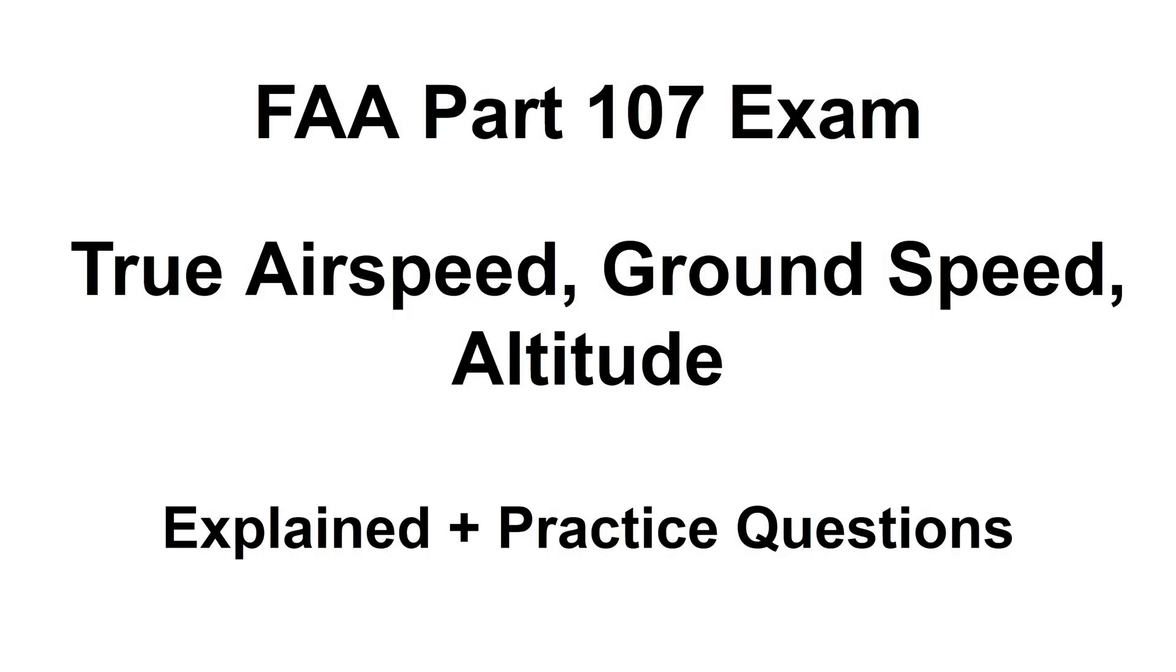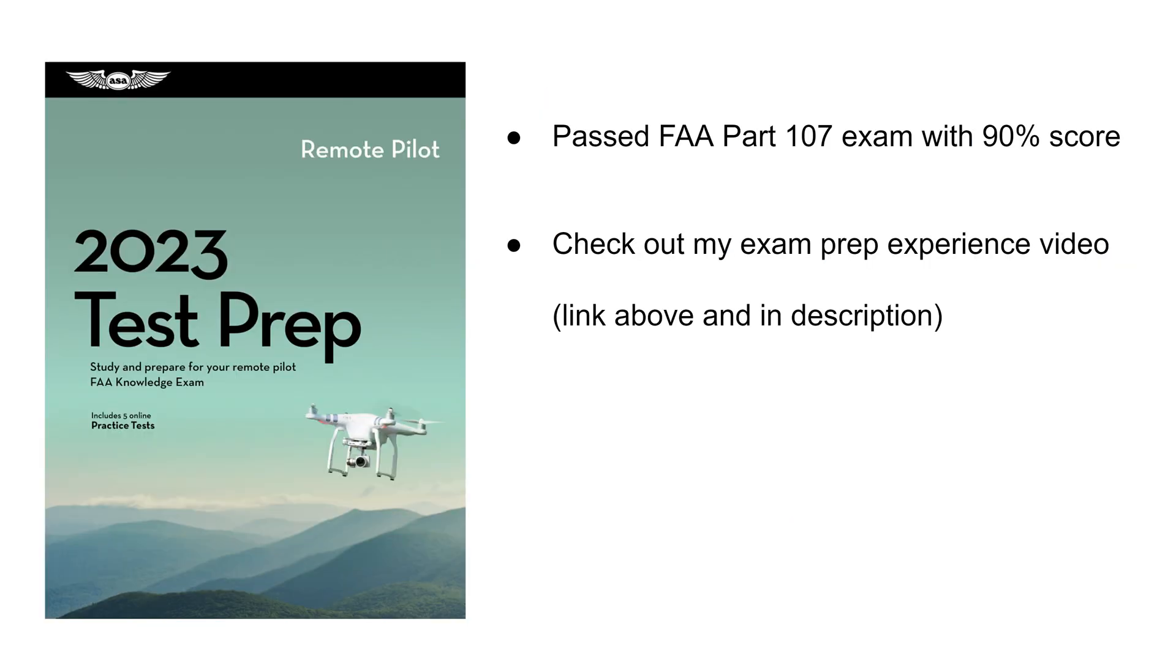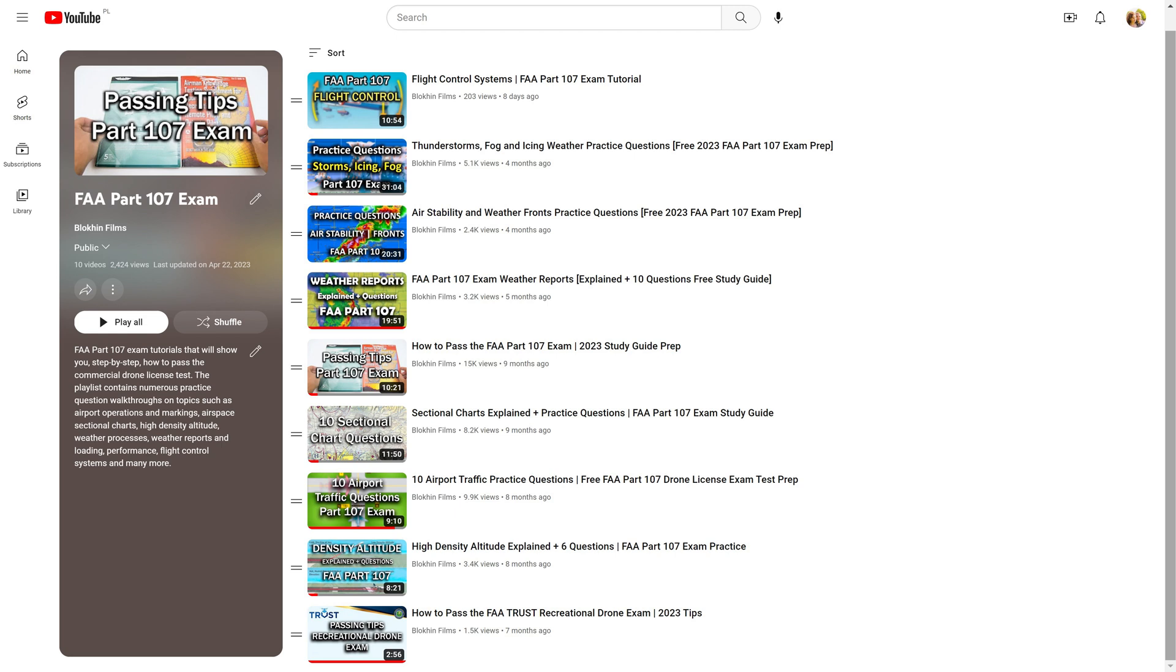In this FAA Part 107 exam tutorial, I cover material on various types of aircraft speeds such as calibrated airspeed, true airspeed, and ground speed. I also talk about navigation methods that determine speed and altitude, such as dead reckoning and wind triangle. A lot of the material covered is similar to that in the study guide I used to prepare for and successfully pass the FAA Part 107 exam with a 90% score. There are many other YouTube tutorials I've made to help you prepare for the exam. I linked all of these resources in the description and above.